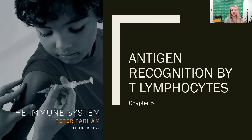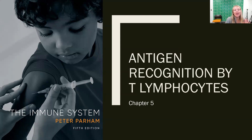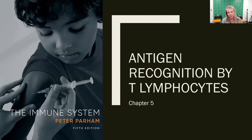Chapter five is going to look very similar to the content we covered in chapter four in terms of how receptors are made — the genetics will be a lot of the same. But we are looking at a totally different type of cell. We're still in the lymphoid lineage looking at lymphocytes, but this time we're looking at T lymphocytes rather than B lymphocytes, or as we tend to call them, T cells.